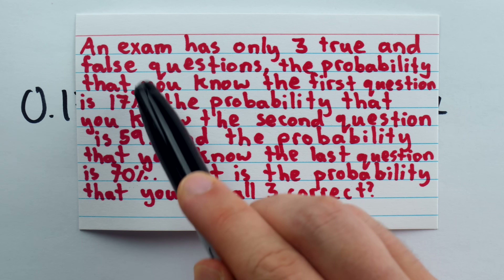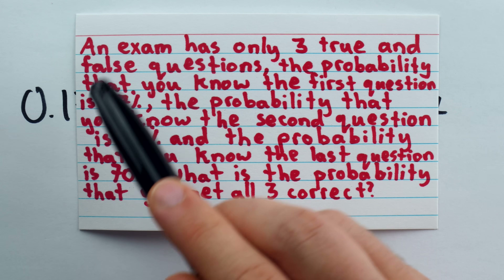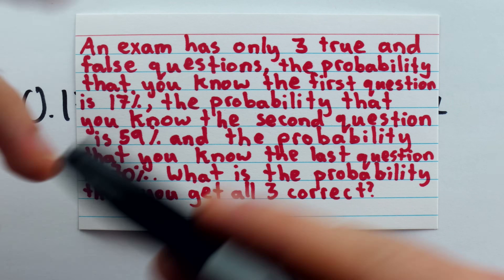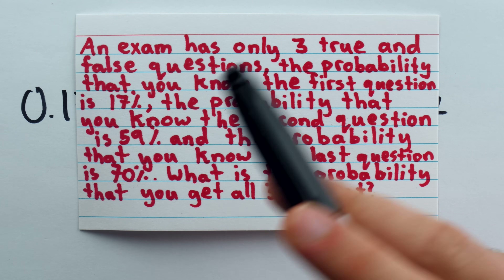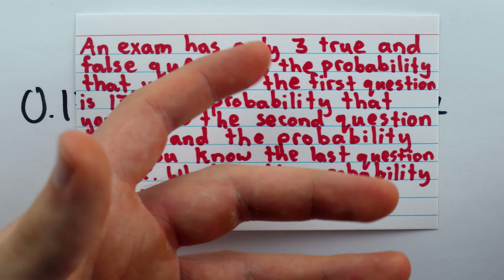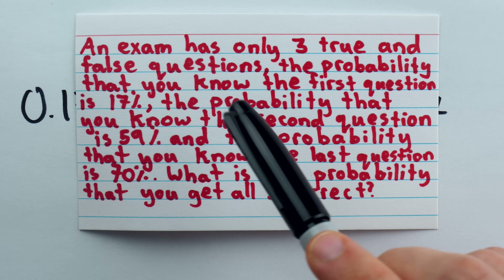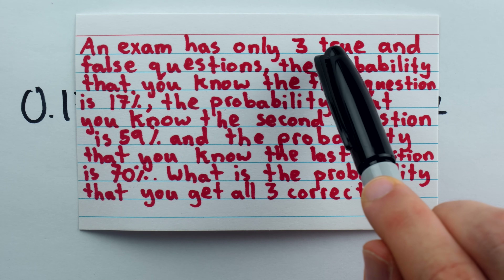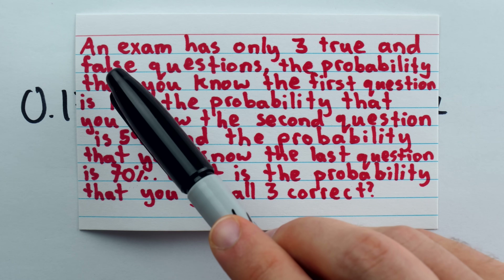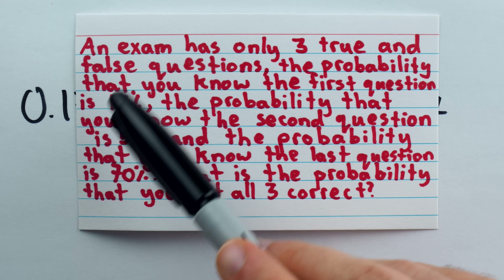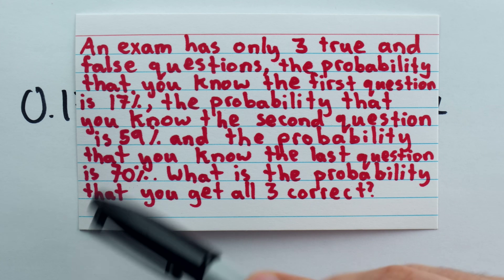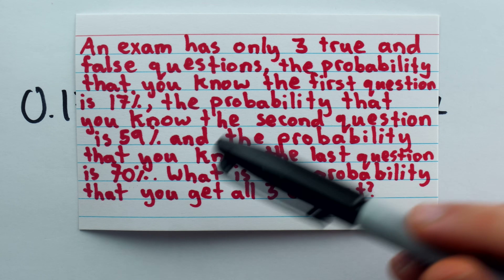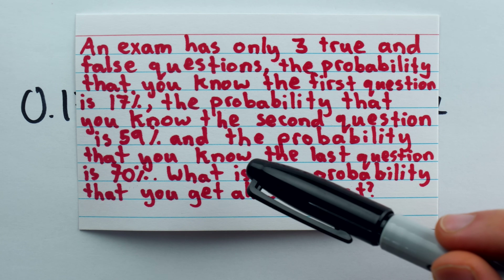Sure, there's a 17% chance that you know the answer, but suppose you don't know — the questions are true or false. So even if you don't know the answer, there's still a chance you could get the question correct.